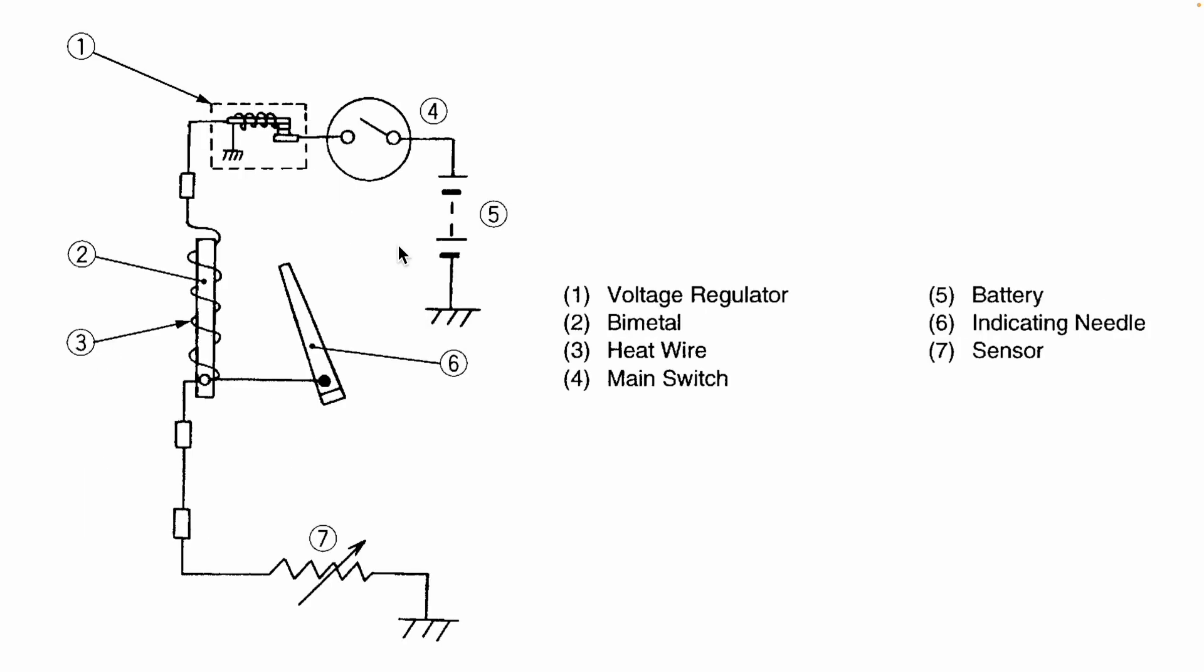Here I have a diagram of the entire circuit that's responsible for generating a fuel reading. It begins with the battery and the main switch. The main switch is always closed when the tractor is on. Then there's a voltage regulator, which is there just to ensure that changes in battery voltage don't impact the fuel reading. Then the wire passes around a piece of bimetal, and finally it goes through the variable resistor that we talked about earlier. With the exception of the variable resistor, everything else is located outside of the fuel tank.